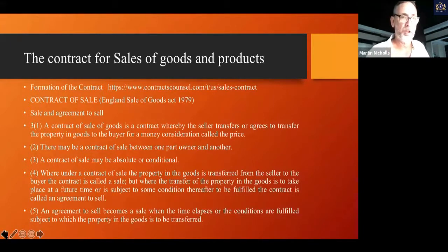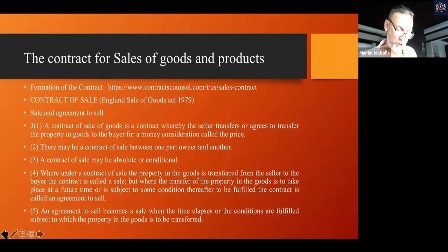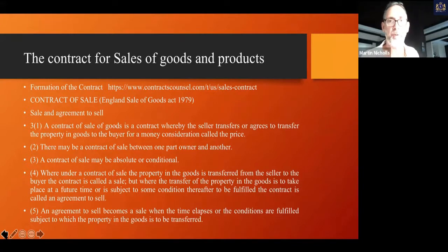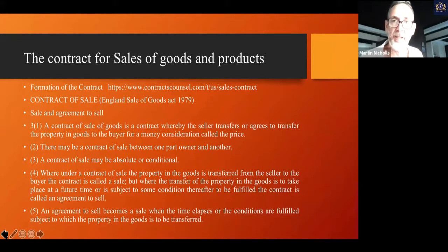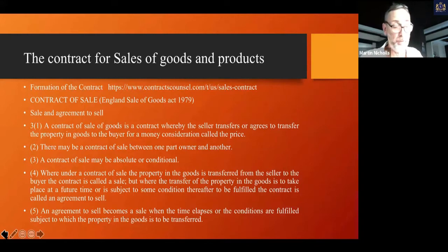Let me recap what we talked about: the formation of a contract. If you've got your pen handy — a contract of sale is whereby a seller transfers or agrees to transfer a property to a buyer for a price. What really makes up a contract is an offer of service or product, the acceptance of the offer, and a consideration — that being the price. So those are the three main things: what am I going to give you, what are you going to give me, and how much are we going to pay?